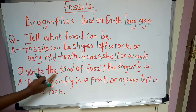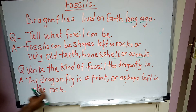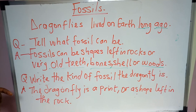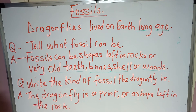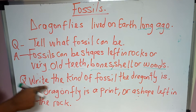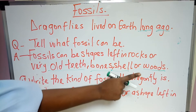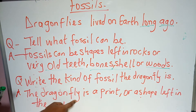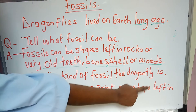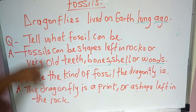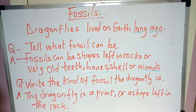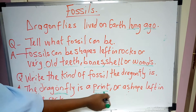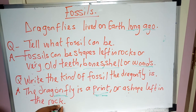Write the kind of fossil the dragonfly is. In the picture, I showed you the picture of a dragonfly and the one on the rock — the one that has a print on the rock. The dragonfly is a print or a shape left in the rock. If you look at the rock very well, you see that it's a print — it's a print of the dragonfly, or the shape left in the rock.